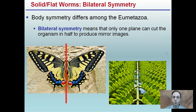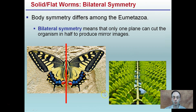Flatworms have bilateral symmetry. This body symmetry differs from others — bilateral symmetry means that only one plane can cut through the organism in half to produce mirror images. We see the example here with the butterfly and also the fern. This is bilateral symmetry — there's a distinct left and right half, and these flatworms have this type of symmetry.